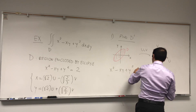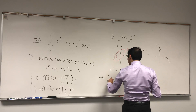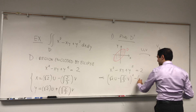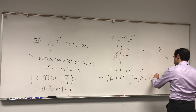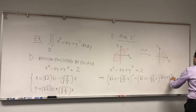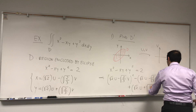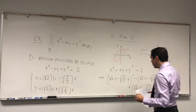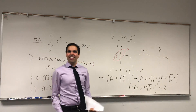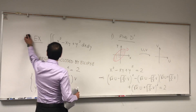So x² minus xy plus y² equals 2. Now let's use the formulas for x and y in terms of u and v. This looks very strange because it becomes a much more complicated equation — but why in the world would you replace something that simple by something that complicated? Because it will simplify. Just bear with me for a couple of minutes.